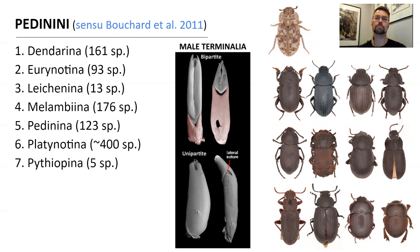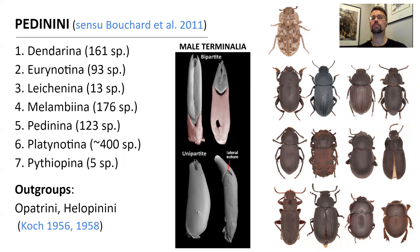The relations between the sub-tribes were unknown before my study, as phylogenetic work had never been conducted on the tribe. I referred to available literature and selected Opatrini and Halepinini as potential outgroups. In the case of Opatrini, a close relation between this tribe and Pedinoid beetles was postulated by many authors, while for Halepinini there were only a few scattered remarks in the literature.